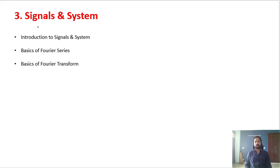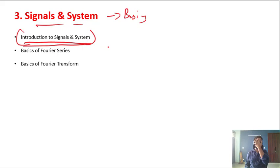Next is Signals and System, but only basics are covered. Major importance is given to introduction to signals and system: various types of signals like parabolic signal, step signal, causal and non-causal systems, linear and non-linear systems. These are the topics to be covered.